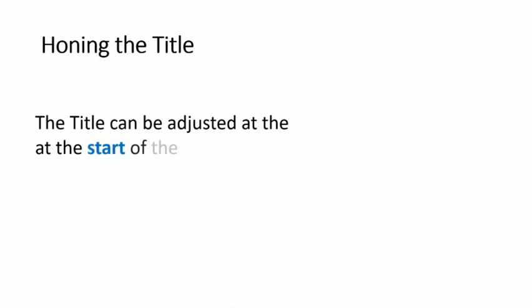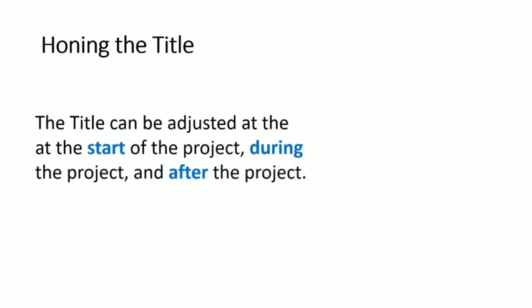Finally, let us look at honing in the title — this is where we come up with a final title. Titles may be adjusted at the very beginning of the project, during the project, and after the project has been completed. The direction of research may not necessarily coincide with the title we had originally, and so we may have to adjust the title. At the end of the project, after all the research data is in, we may discover that the direction has changed again, and therefore our project title may need further adjustment. The adjustment made at the end of the project should be the final adjustment for your project title.